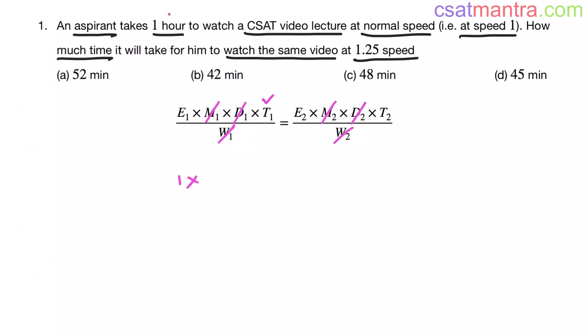T1, 1 hour, let's convert it into minutes because answer is in minutes. So 1 hour is 60 minutes, this is equal to E2 is 5 by 4. T2 we want to find out. 5 times 12 is 60. So T2 is 48 minutes.